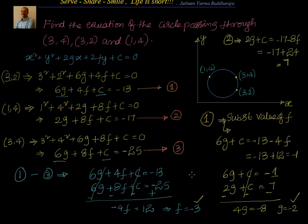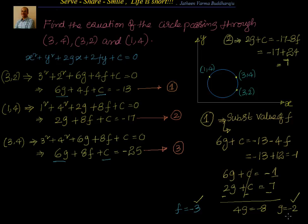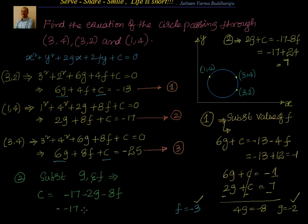Now we have g = −2 and f = −3, and we just need to find c. Substituting into Equation 2: c = −17 − 2g − 8f = −17 − 2(−2) − 8(−3) = −17 + 4 + 24 = 11. So c = 11.